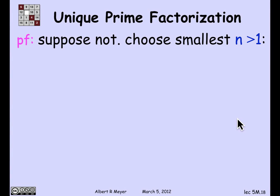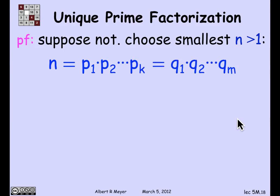How are we going to prove that? Suppose that it wasn't true — suppose some number could be factored in two different ways. By the well-ordering principle, there's a least such number greater than 1 that can be factored in two different ways. Call it n. So n equals a product p1 through pk, and also equals another product q1 through qm, where the p's and the q's are all prime, and these two weakly decreasing sequences are not the same — they differ somehow.